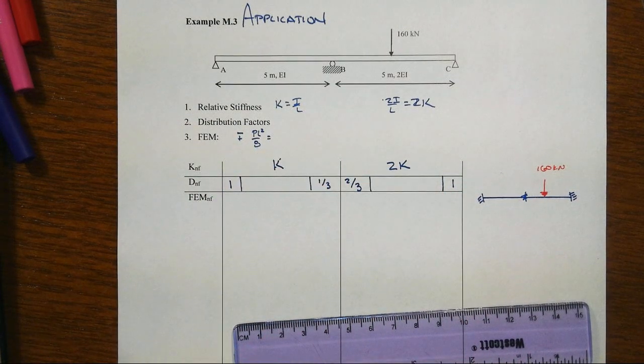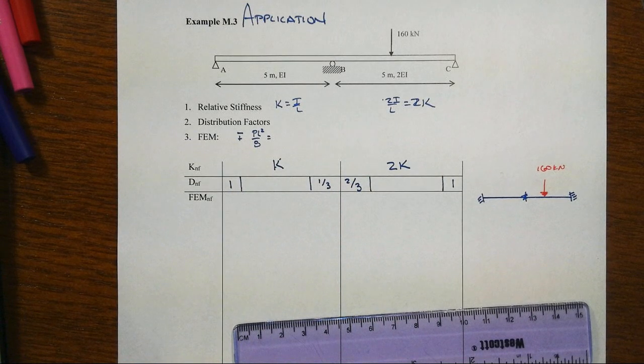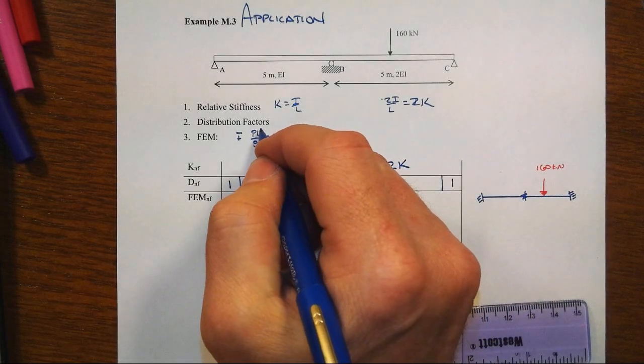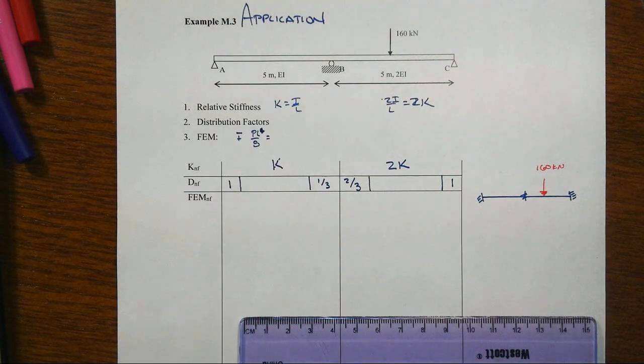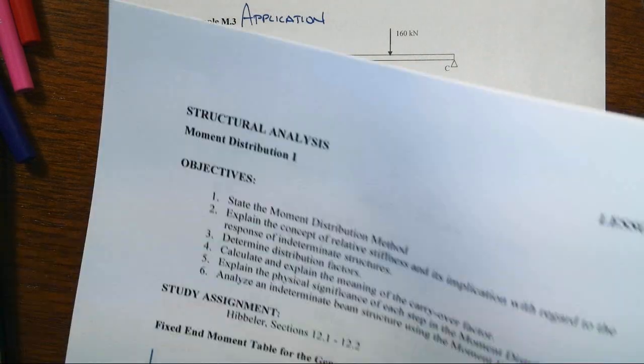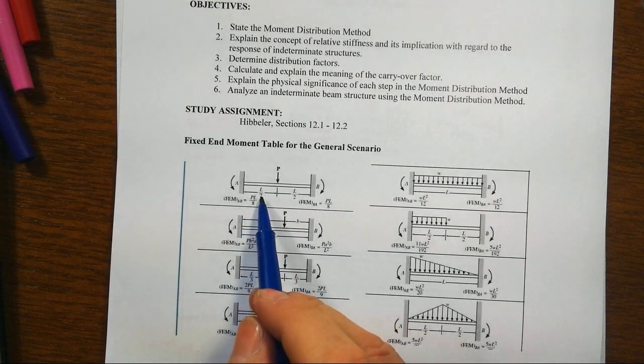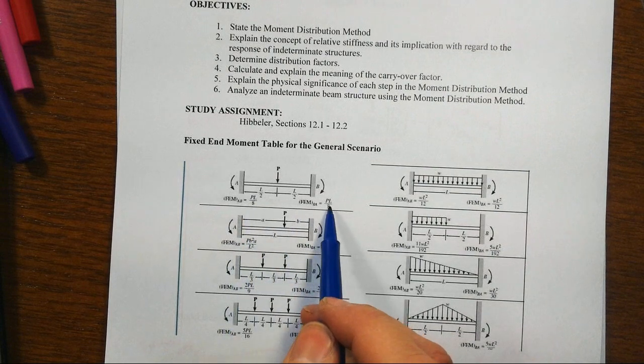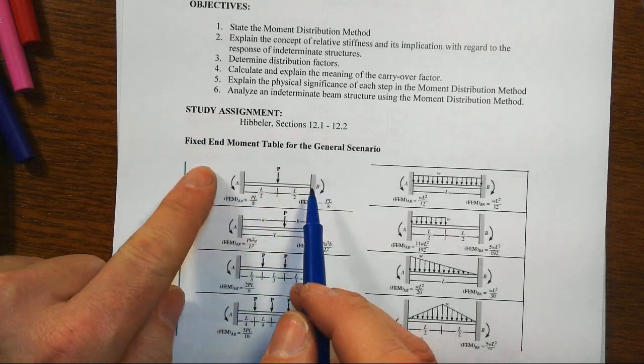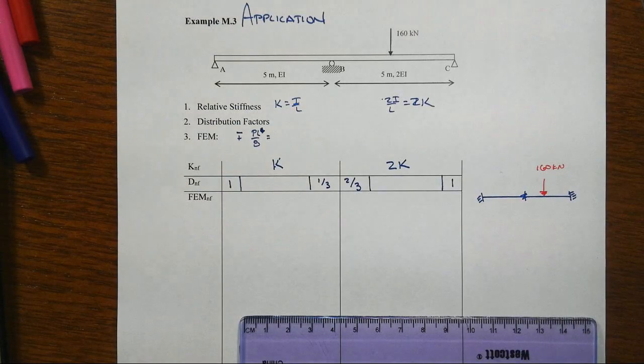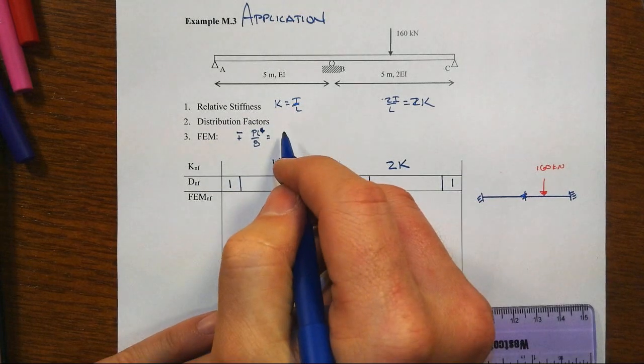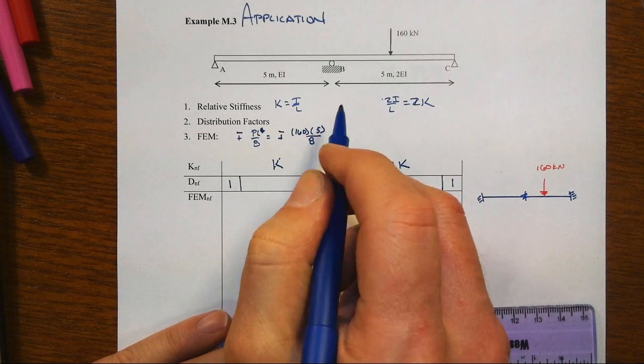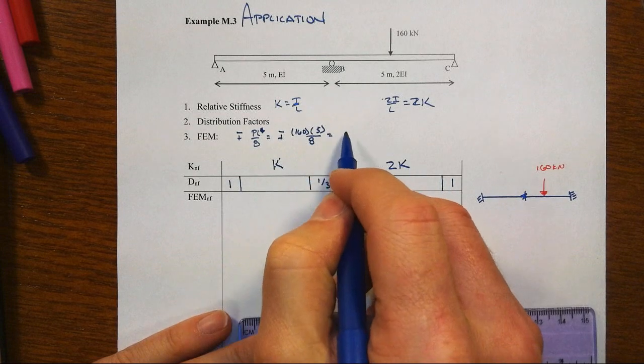Now remember that for this case of a mid-span load, the fixed end moments were a minus and plus of the PL over 8. That's not PL squared over 8. That's just PL over 8. And remember you want to have your handy tables available for you to do that. PL over 8 on one end, PL over 8 on the other. Notice clockwise positive, counterclockwise negative there.